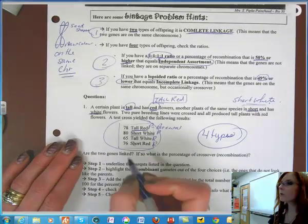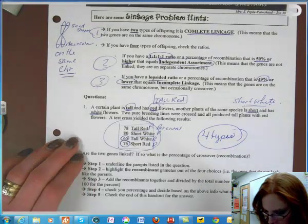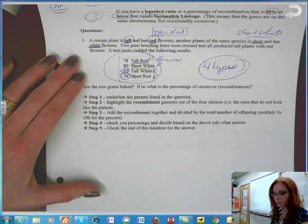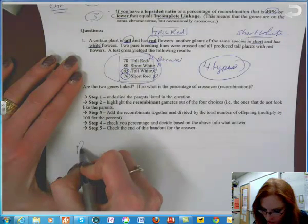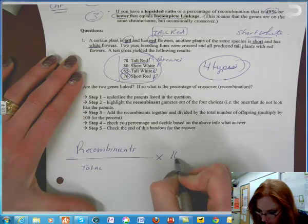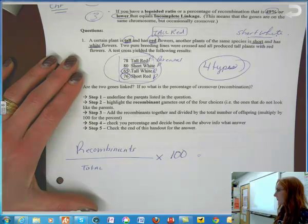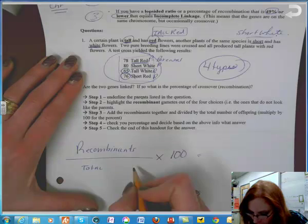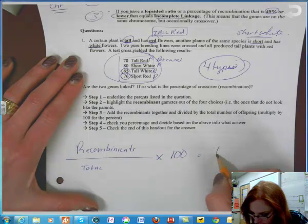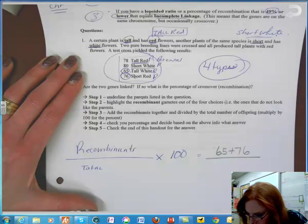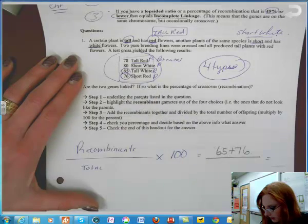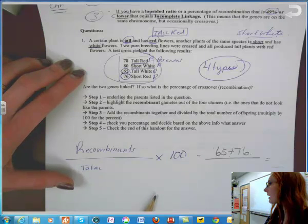Now to calculate the percentages that will confirm the type of linkage that we have happening or not happening, we need to take the recombinants. So the formula will be recombinants divided by the total times by 100. It will give us the percent that tells us what we need to know. So in this case, what are the two things I need to add together? Correct. So I add 65 plus the 76. What I'd like you to do right now is calculate the total. So add your recombinants, calculate the total, and then times it by 100 and put down what you have. And we'll just pause for a moment and then we'll come back in about 60 seconds and check where we're at.